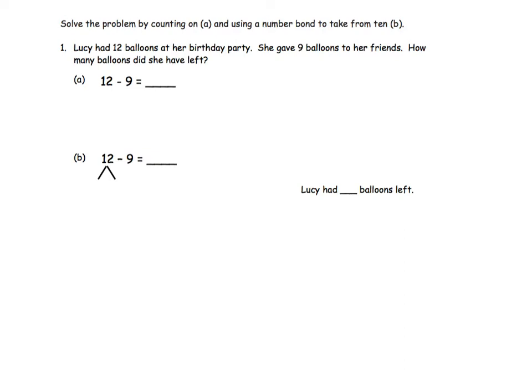In A, we are using the counting on method. We start with the 9 and we count and make dots until we reach 12. So we say 9, 10, 11, 12. We made three dots, so the answer is 3.